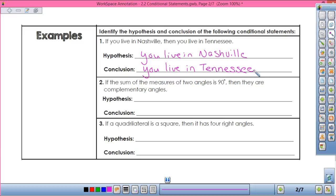Alright, so number two is if the sum of the measures of two angles is 90 degrees, then they are complementary angles. What's my hypothesis? The sum is 90 degrees. My conclusion, yes, they are complementary angles, and I'm totally okay with abbreviations as long as I can understand what it says.